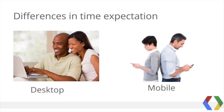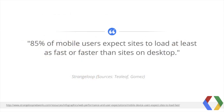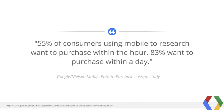An interesting idea I learned about mobile users is that just by holding a mobile device, their expectation of time can differ from their desktop attitude. While as site owners we're well aware of mobile network latency, Strange Loop cites that 85% of mobile users expect sites to load at least as fast or faster than sites on desktop. And when it comes to shopping, 55% of consumers using mobile to research want to purchase within the hour, and 83% want to purchase within a day.